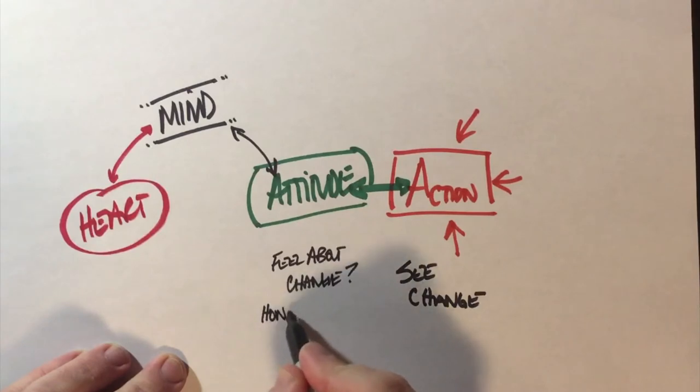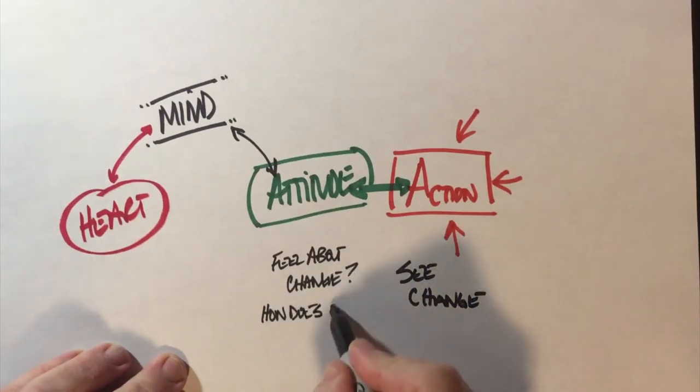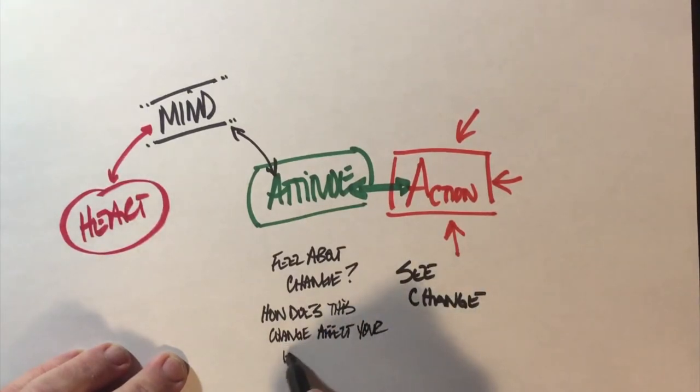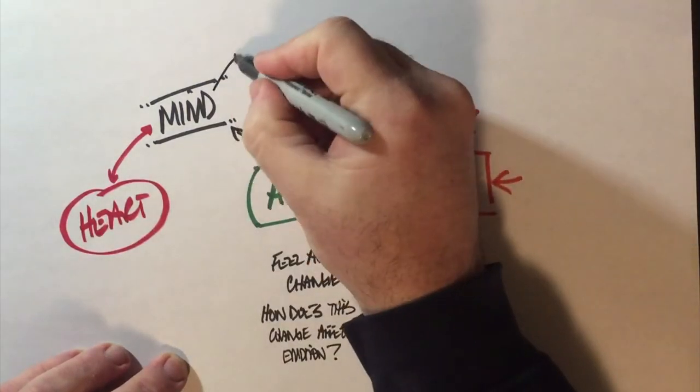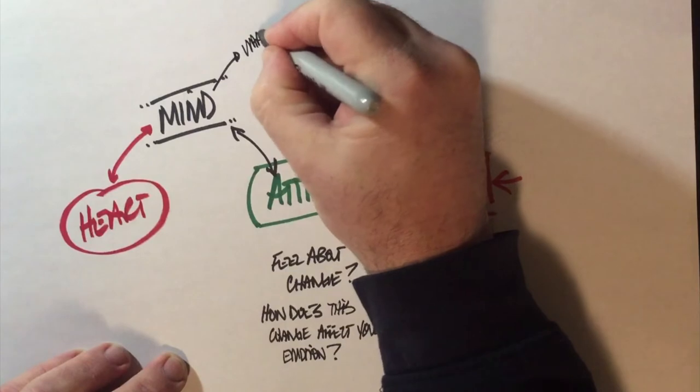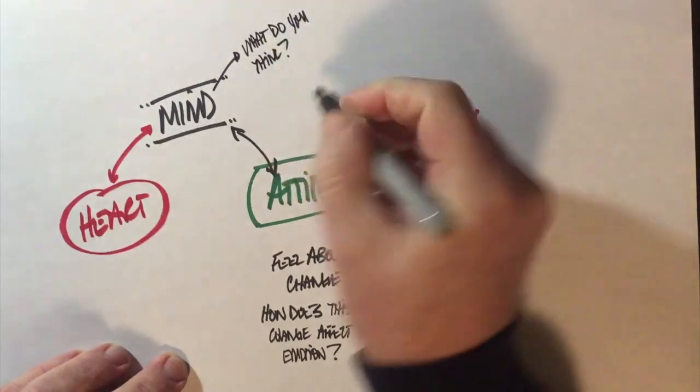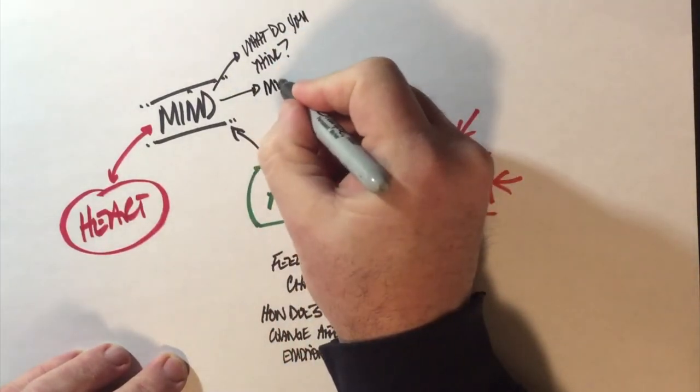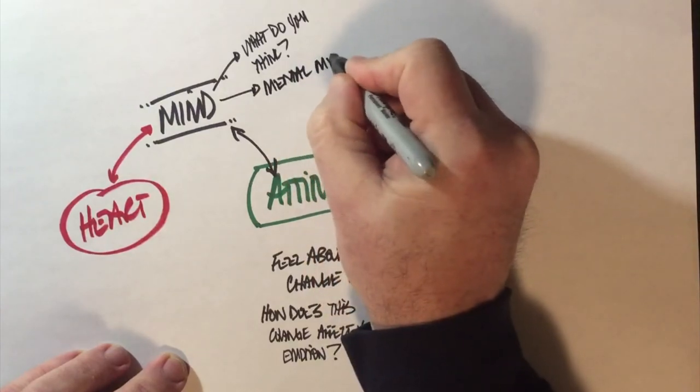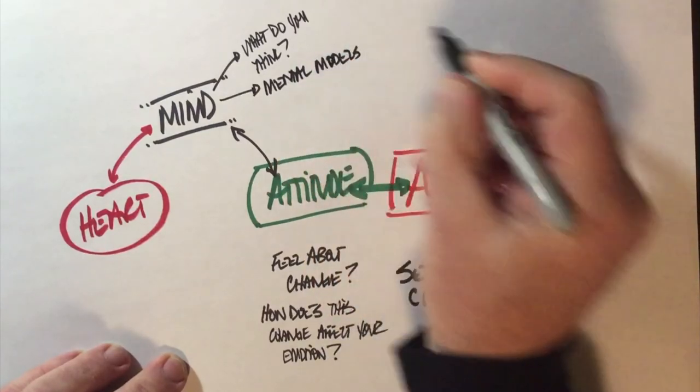Sometimes we'll have to ask people how does this change make you feel or how does this thing affect your emotions. When we start asking these questions we're actually digging deeper into the reasons why people behave the way they do. Because when we look at organizational behavior or individual behavior there's always some kind of emotion behind it. When we start digging a little deeper and we start asking ourselves or other people about what they think, understanding that the mind informs the attitudes, how we think or the mental models that we bring to a situation begin to form our feelings.